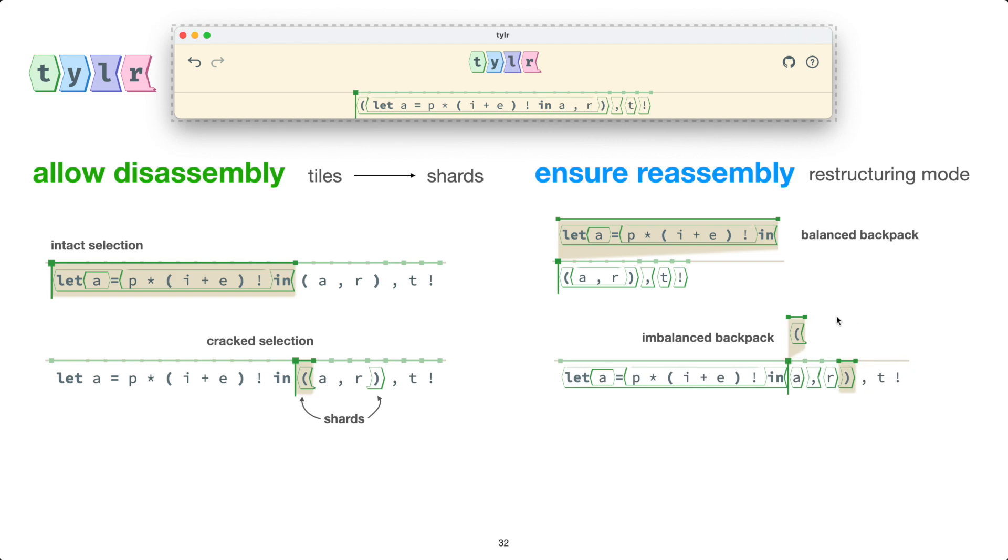And when the backpack is imbalanced, Tyler restricts our movement to positions within the current tile sequence. So we noticed how when I had picked up this parentheses here, I skipped over all these cursor positions in the middle, because if I were to drop this parentheses shard anywhere there, then this would violate the proper nesting structure of matching shards. And so we are prevented from doing so.